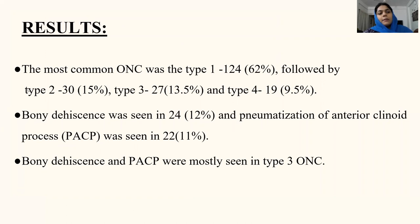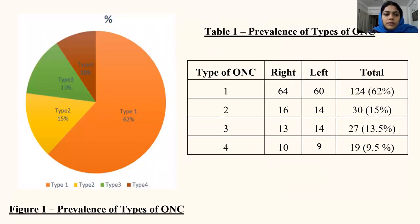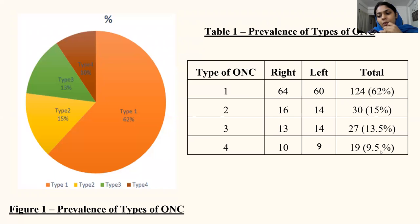The results of my study: the most common optic nerve canal type was type 1, accounting for nearly 62%, followed by type 2 and type 3 at 15% and 13.5% respectively, and the least was type 4 at 9.5%. Bony dehiscence was seen in 12% of the cases and pneumatization of the anterior clinoid process in 11%. This is a pictorial representation of the prevalence of the types of optic nerve canal, where type 1 was the most common on both right and left sides at nearly 62% as a total, and type 4 was the least at 9.5%.